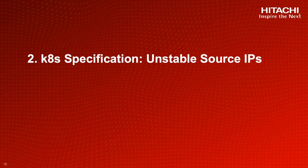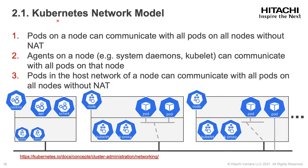Next, the Kubernetes specification of unstable source IPs. Kubernetes has a strict network model because it leverages CNI, or container network interface, to make the backend of the network functionality pluggable. Thanks to the network model and CNI, in Kubernetes we can choose a variety of CNI plugins without worrying about implementation differences. All the guaranteed behaviors of the Kubernetes network should be defined here, so let's go through the Kubernetes network model to see what and how it is defined.